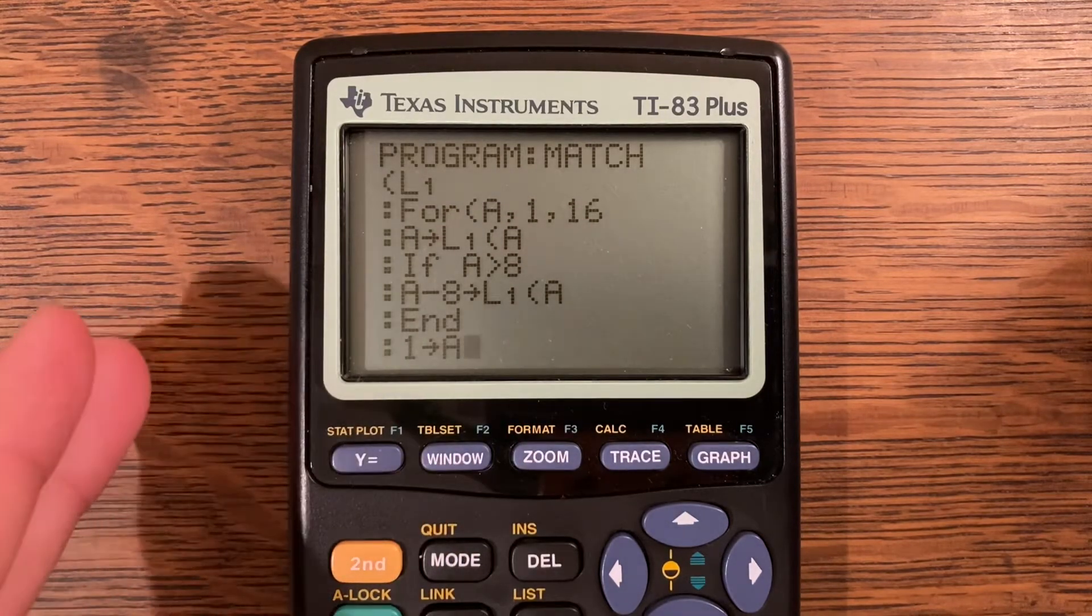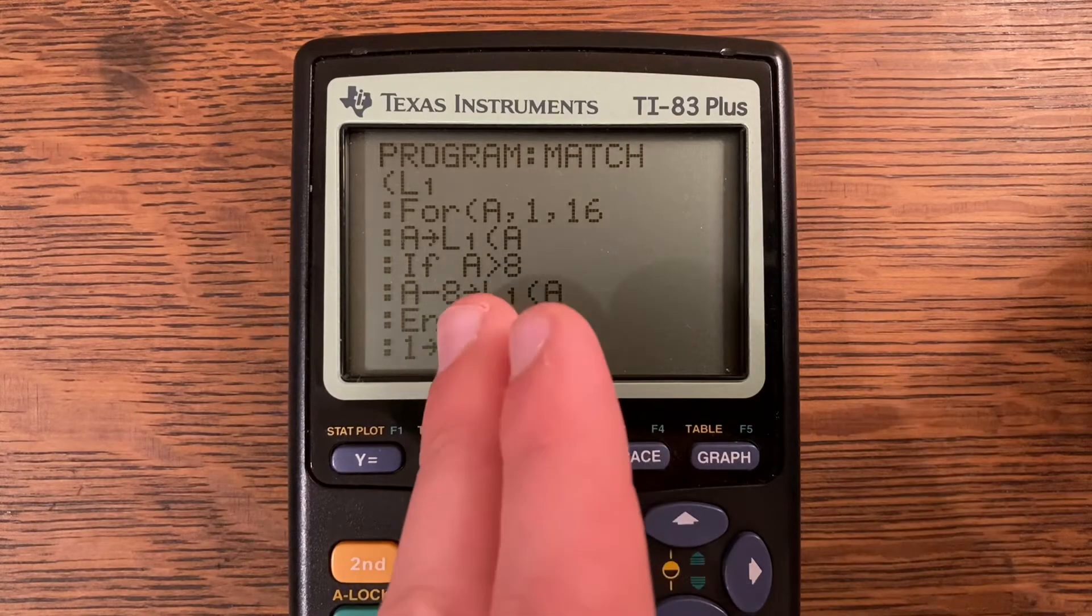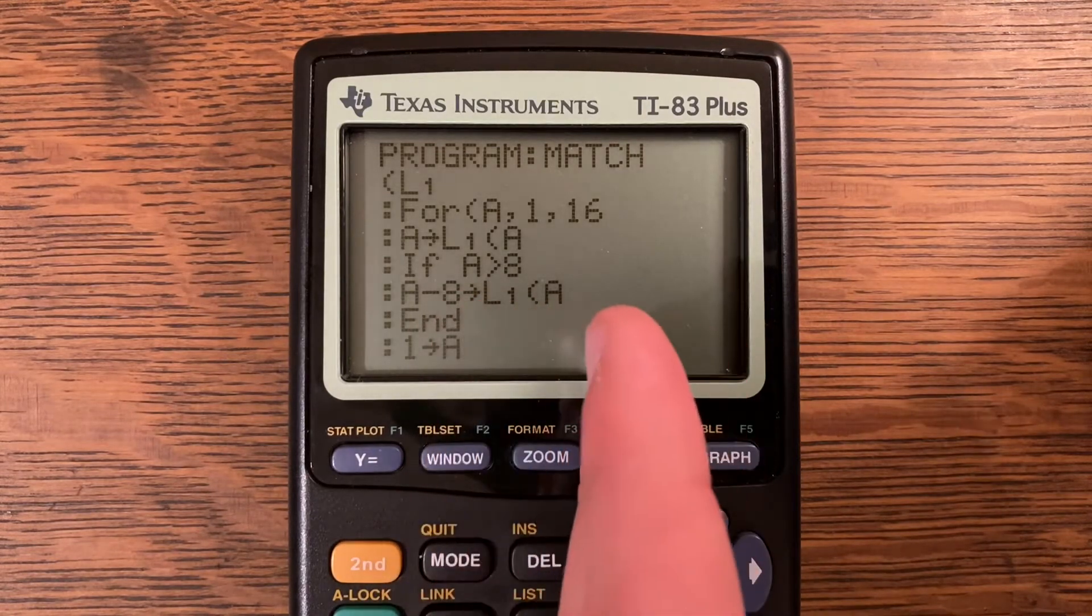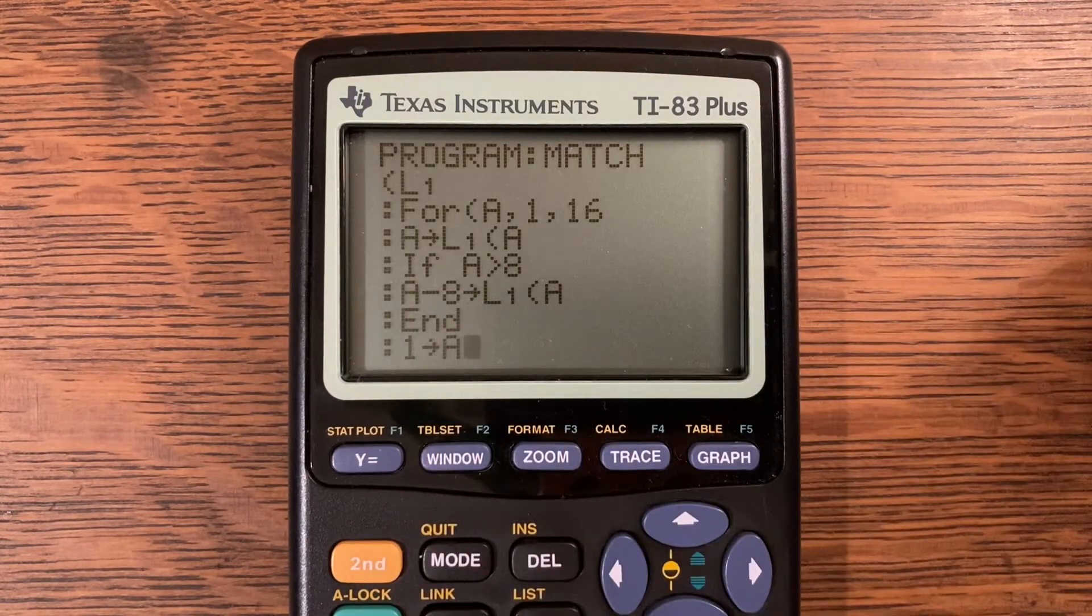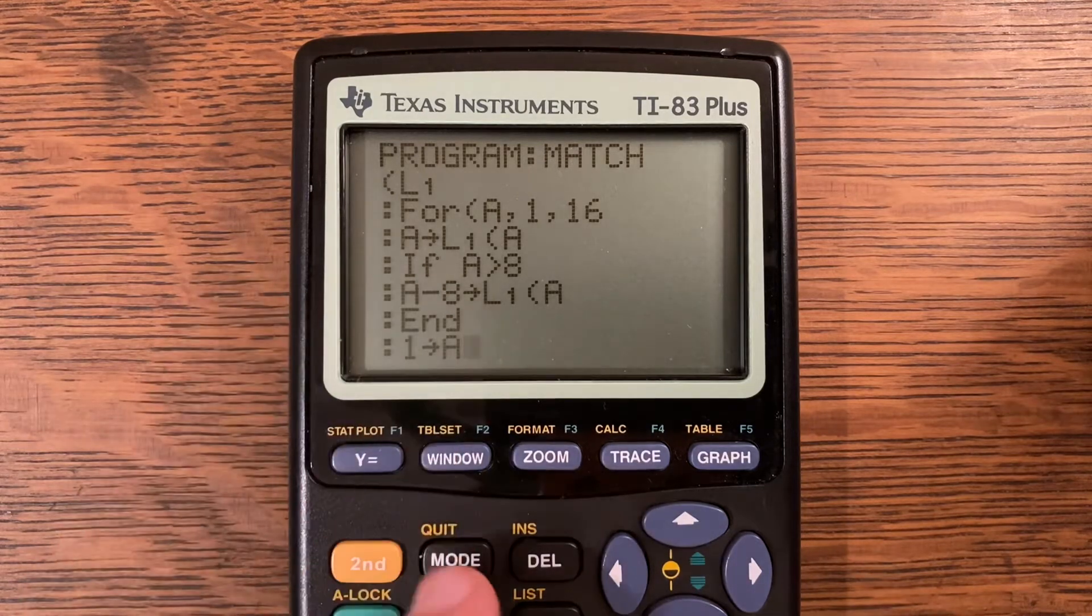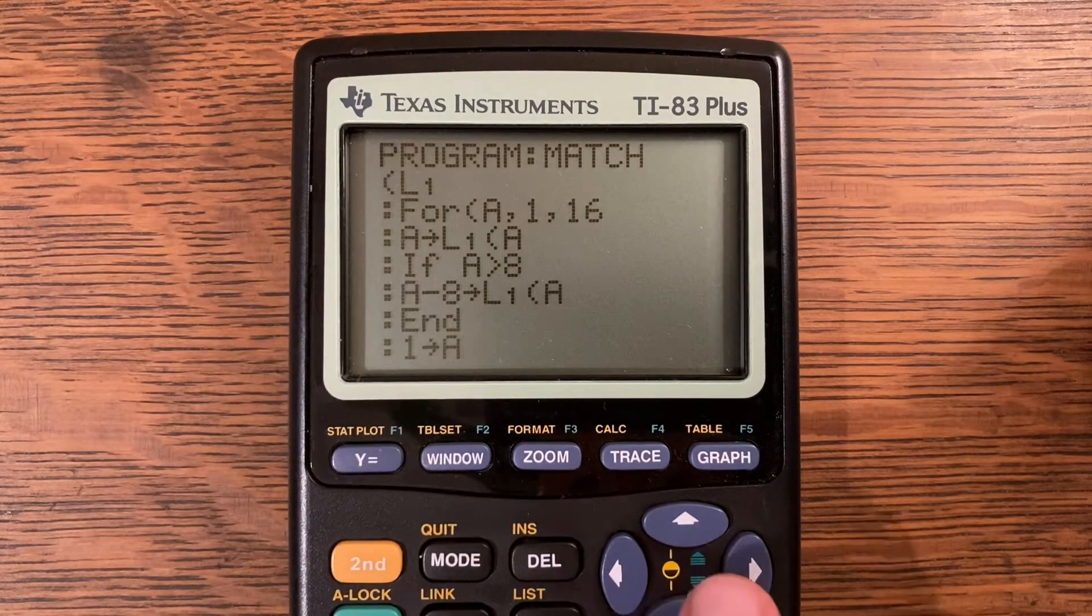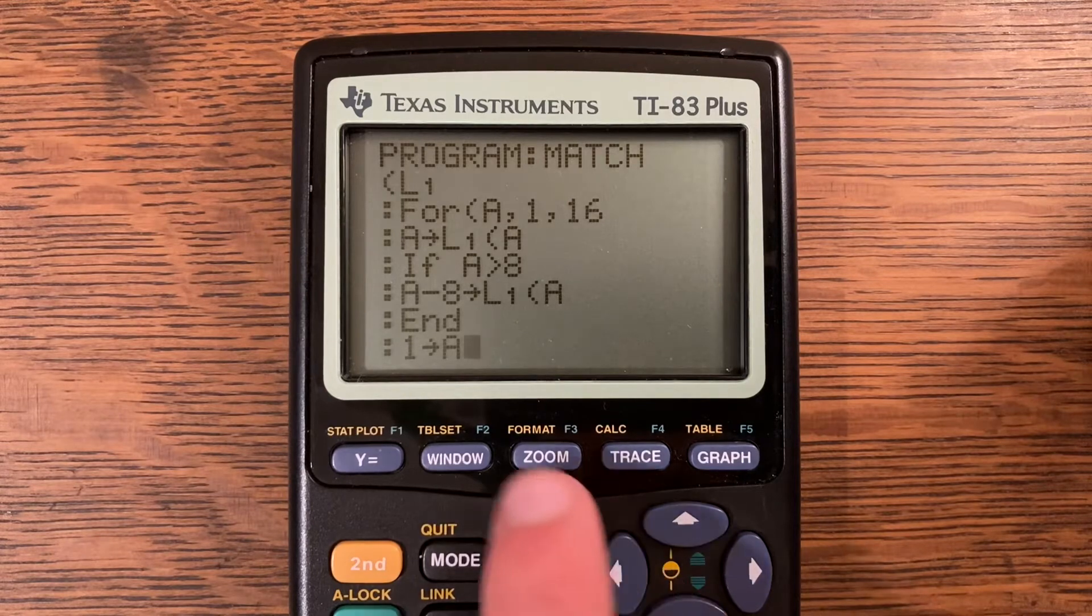If A is greater than 8, A minus 8 store into L1 at A. What I'm doing there is making a copy of every digit between 1 and 16. It's going to go 1 to 8, and as soon as it hits 9, 9 minus 8 is 1, so it starts that process over again. If you wanted to, you could do that twice and have to match three, which would be a lot harder.